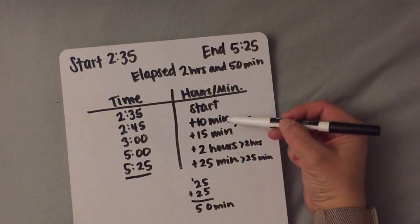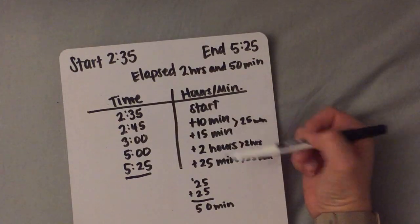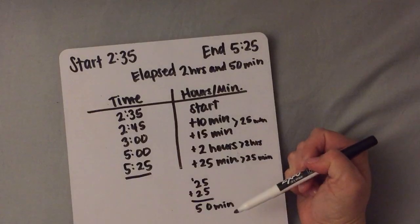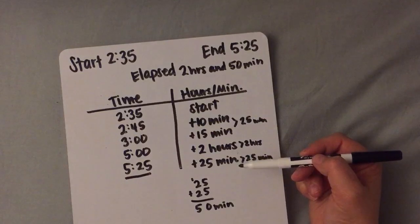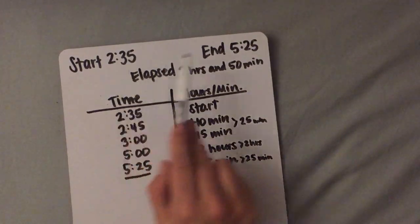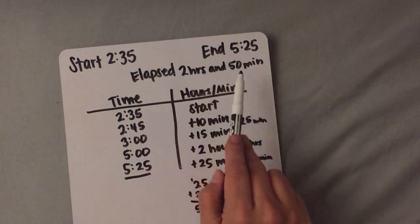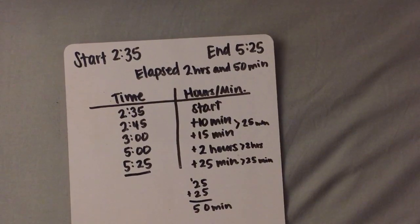I got that by adding up all the minutes: I have 10 minutes here, 15 minutes here, and 25 minutes here. And then I have 2 hours here. You can't mix up the units and add them together. So from 2:35 to 5:25, 2 hours and 50 minutes have elapsed. I hope this t-chart helps you solve any elapsed time problems that you might encounter. Good luck!